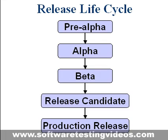The software release lifecycle is composed of different stages like pre-alpha, alpha, beta, release candidate, and production release. Let us go through this one by one.